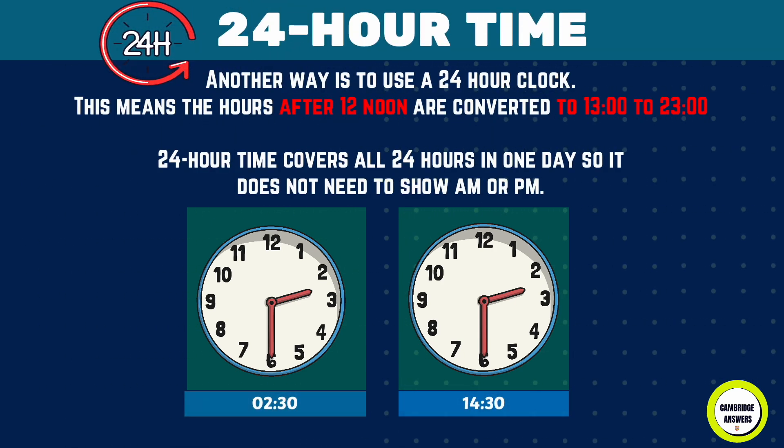Another way is to use a 24-hour clock. The hours after 12 noon are converted — for example, to 13:00 hours and beyond. 24-hour time covers all 24 hours in one day, so it does not need to show a.m. or p.m. For instance, 2:30 a.m. is 2:30, and 2:30 p.m. is 14:30.